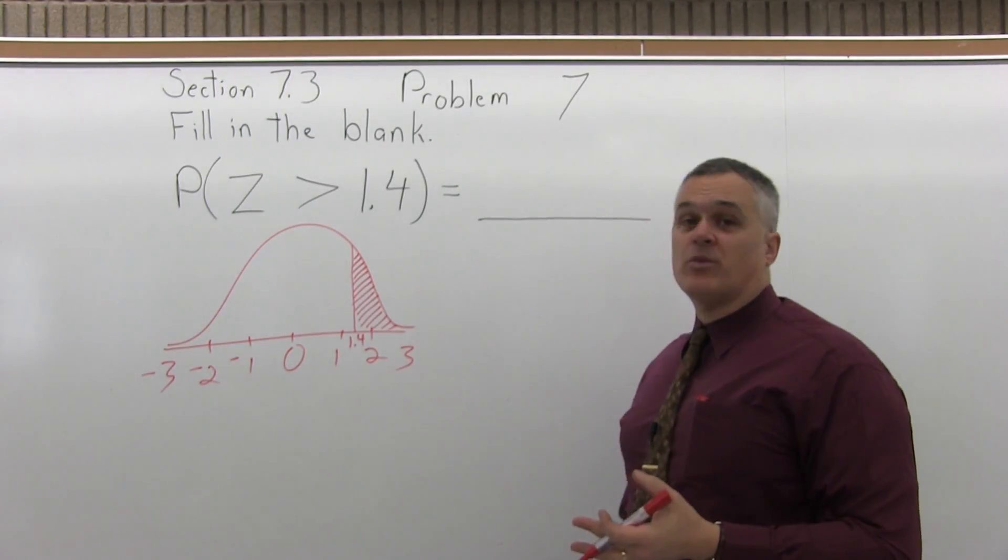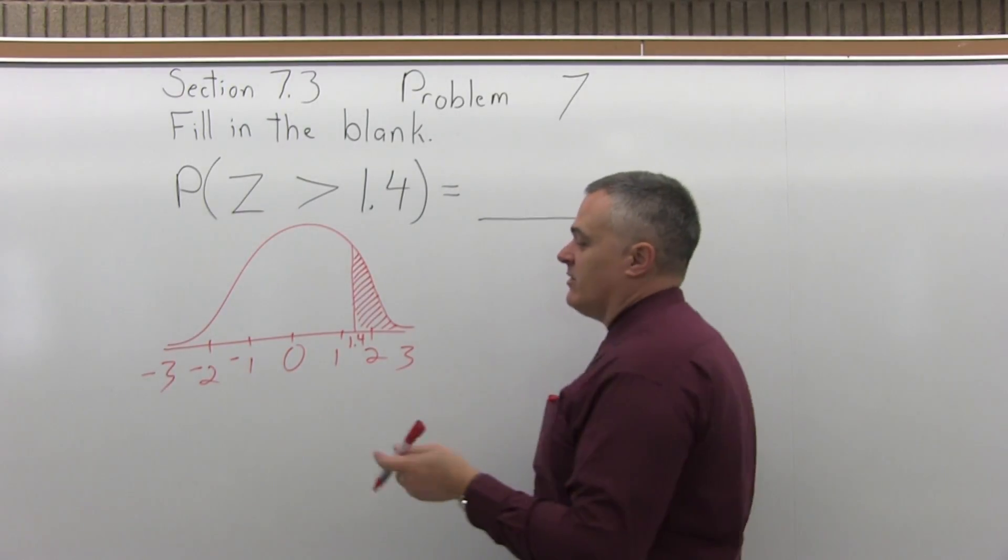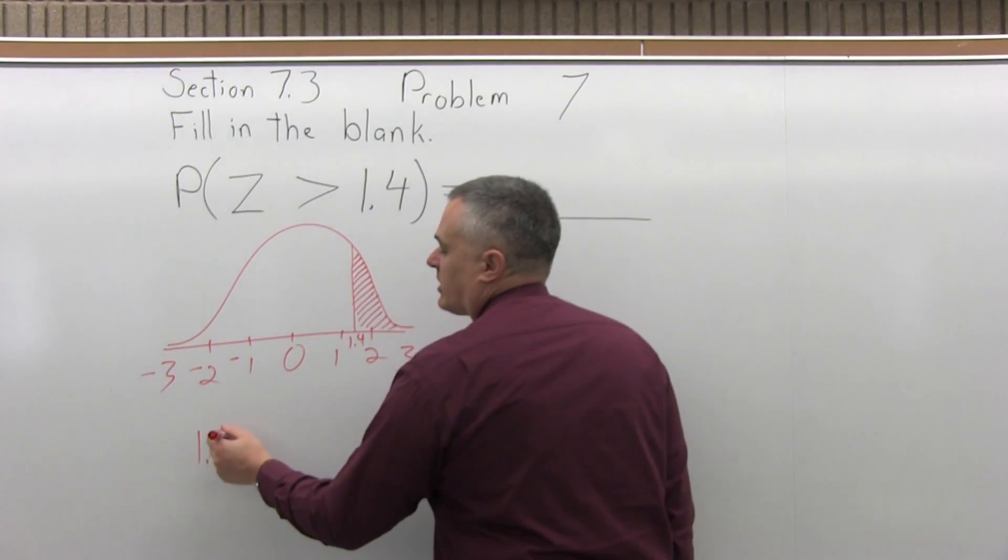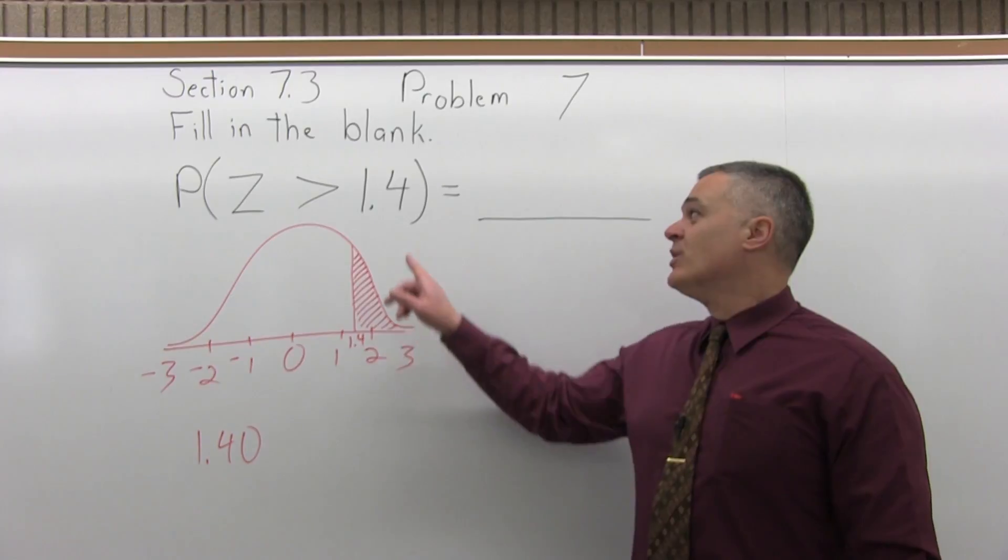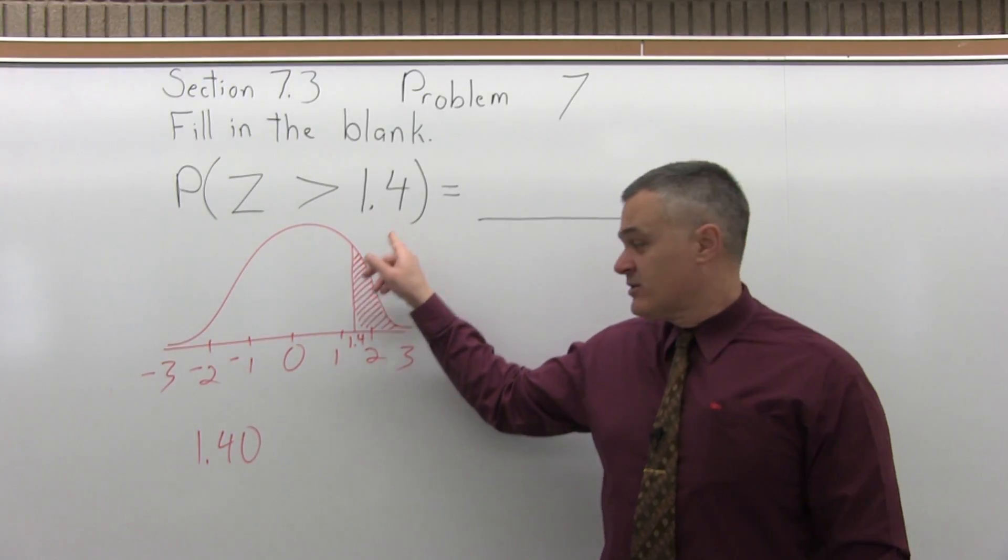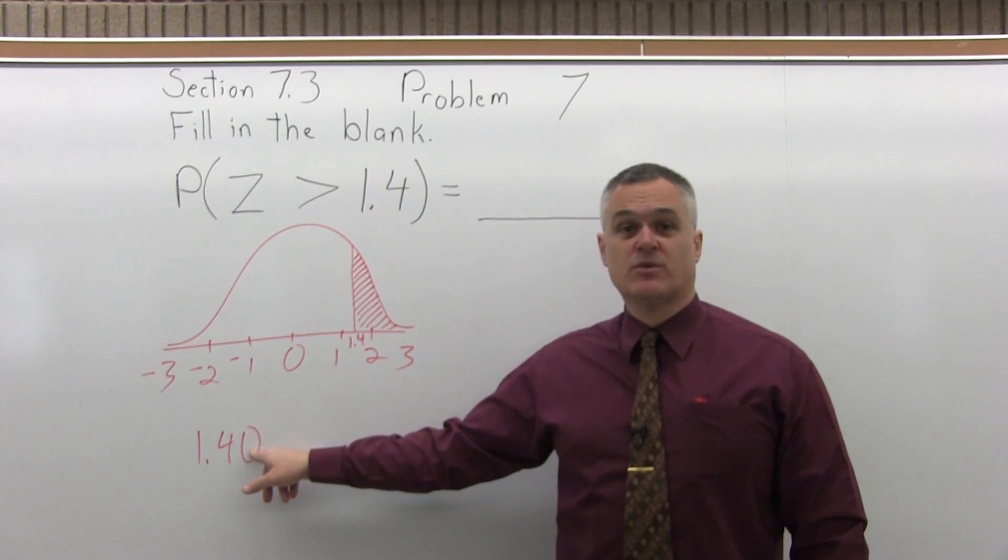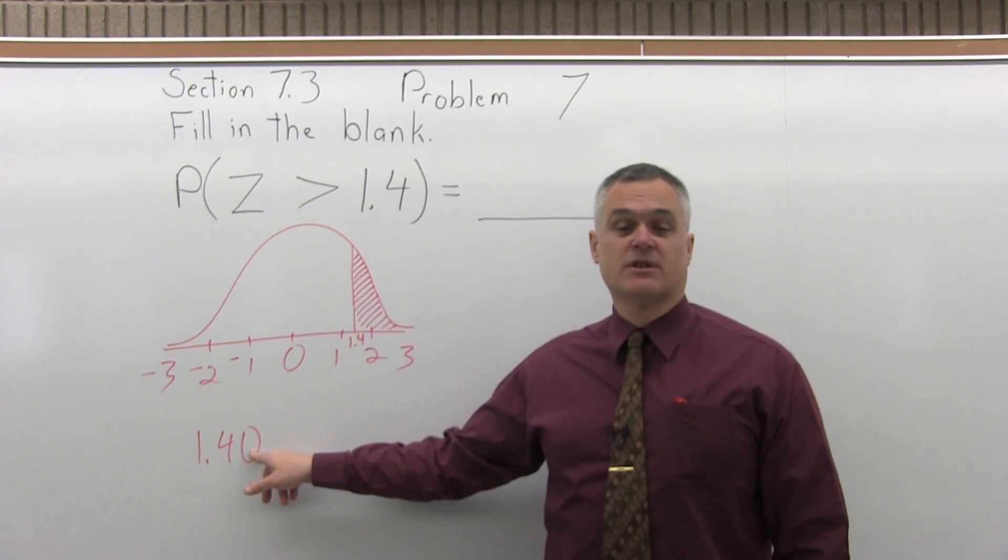So what we need to do is look up 1.4 in that chart. So step one, write the number to look up so that it has two places after the decimal. Now in this case, we only have one. Well we can make it two easily by instead of writing it as 1.4, 1.40. So now we have two spaces.